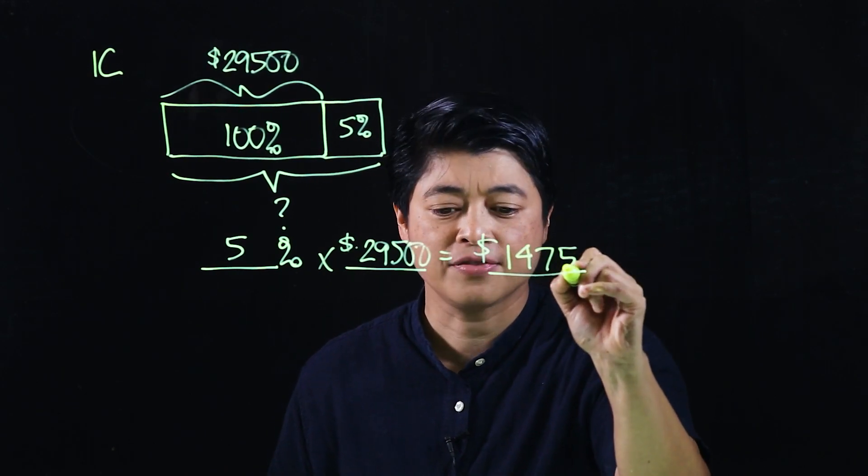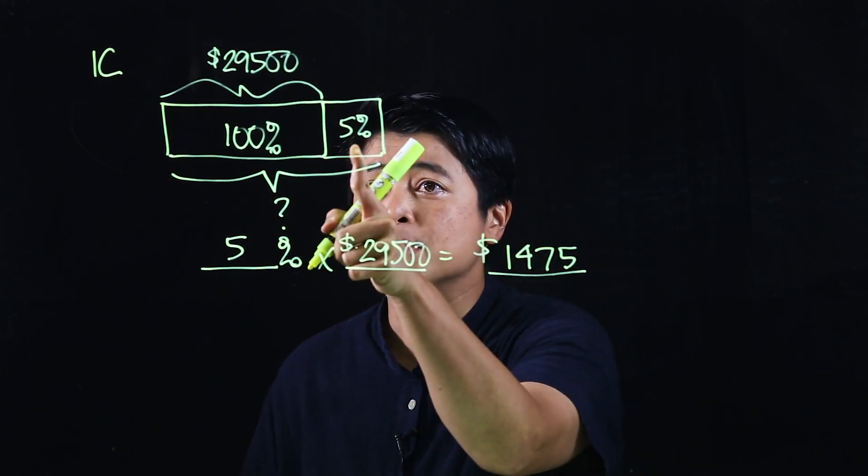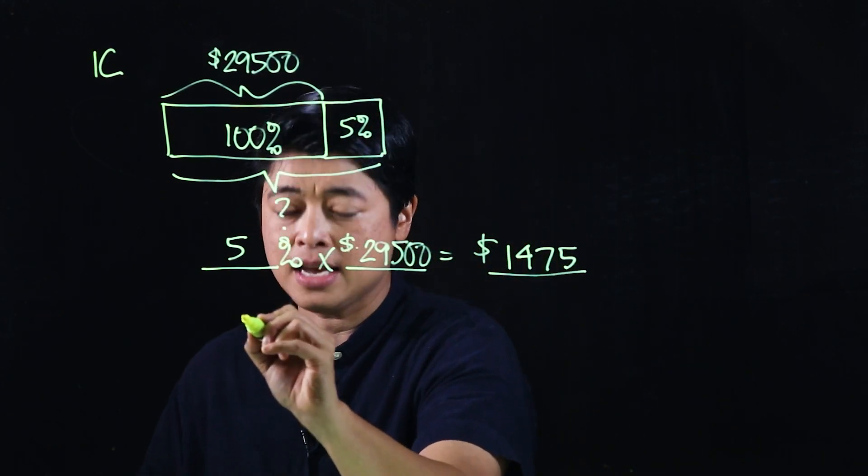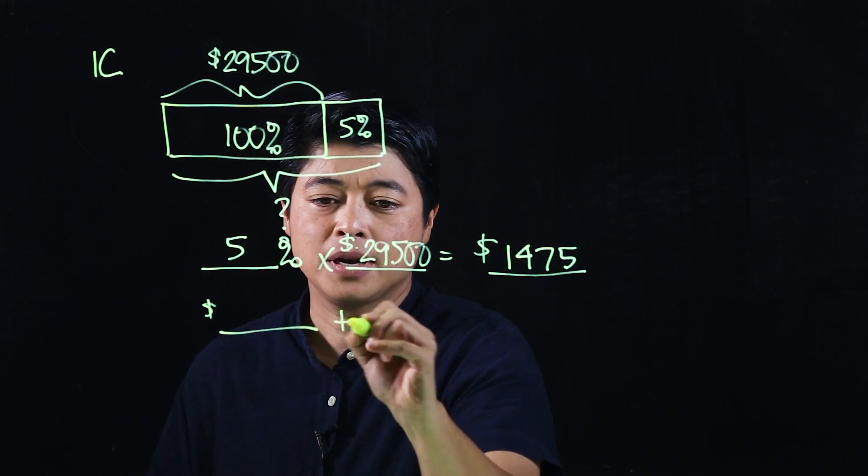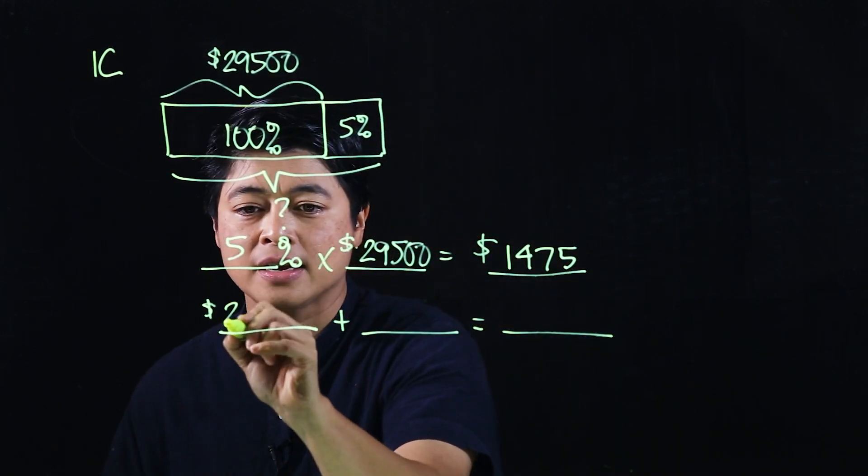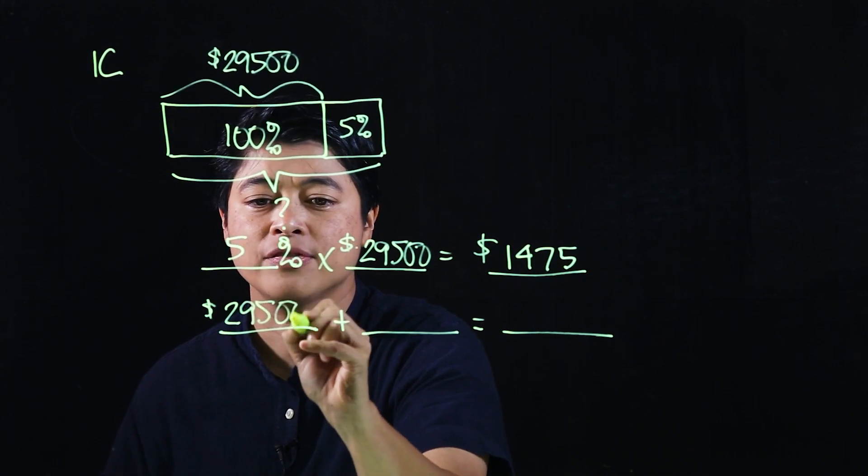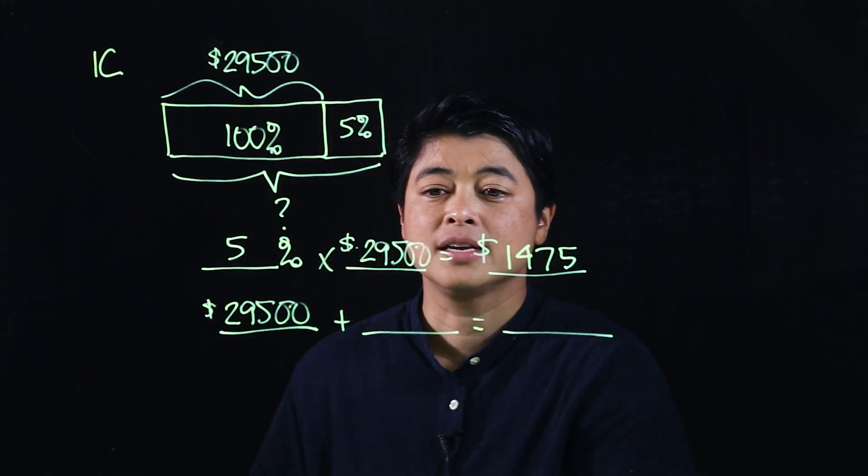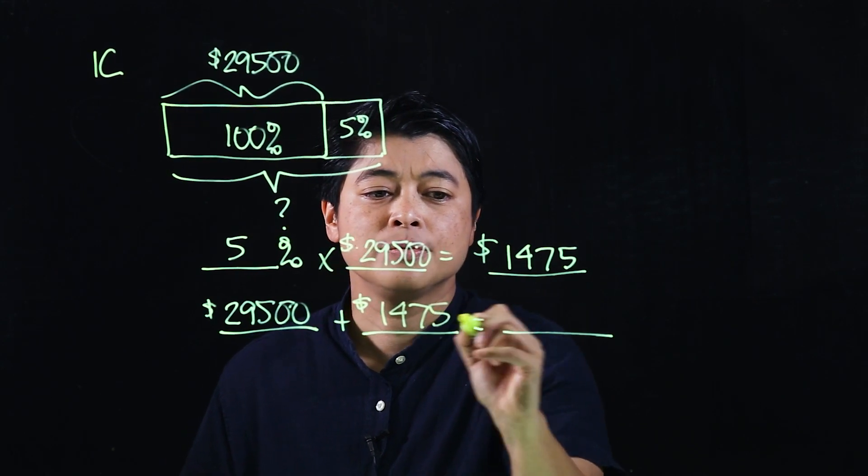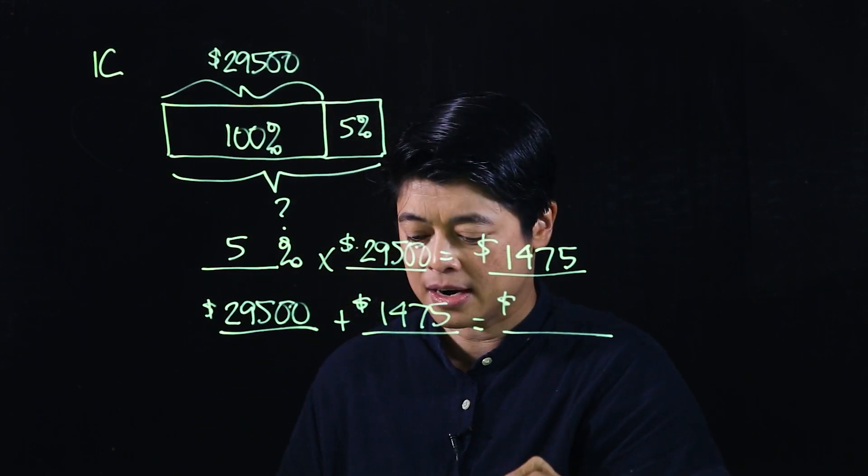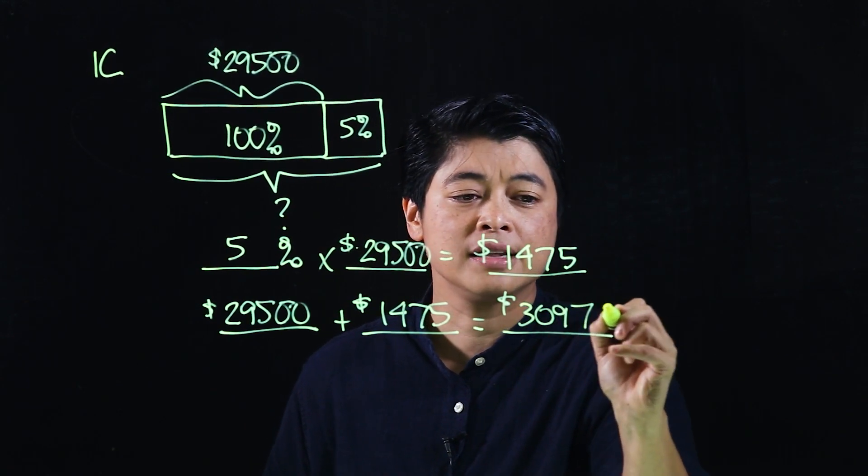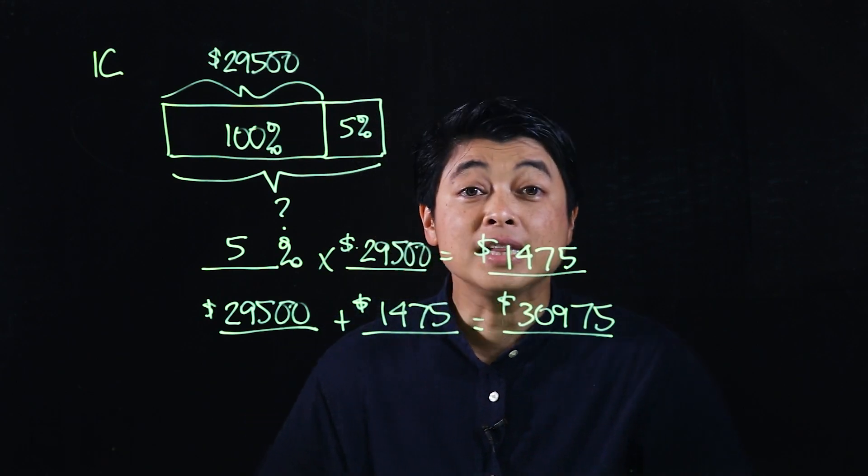That's the 5 percent that was earned. But it goes on to say dollar blank plus blank equals blank. The dollar blank is the $29,500 at the start, this is the interest that was earned, which means at the end of the year Mr. Lee had $30,975.